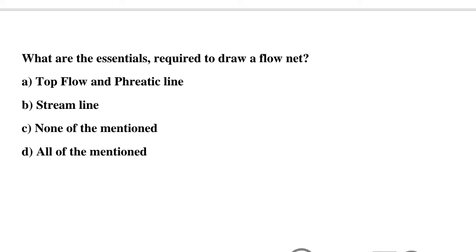Question 11: What are the essentials required to draw a flow net? Option A: top flow line and phreatic line, Option B: streamline, Option C: none of the above, Option D: all of the above. The correct answer is Option A: top flow line and phreatic line.